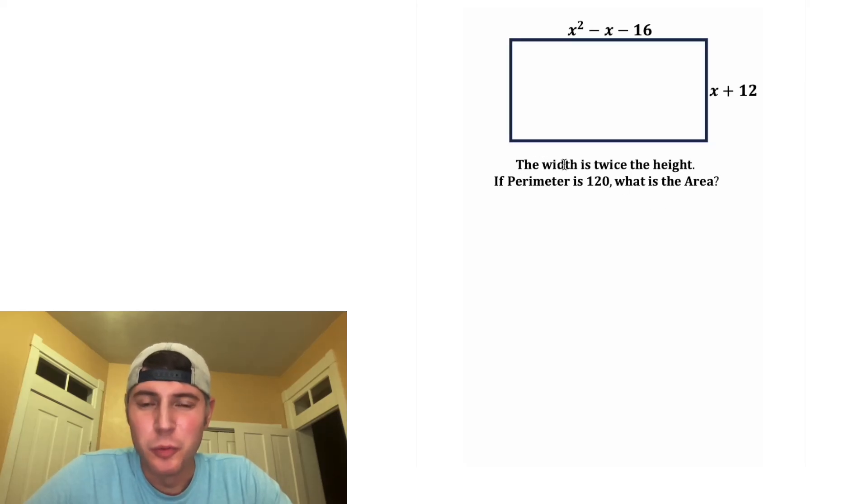Hey guys, I love this problem. It says the width is twice the height. If the perimeter is 120, what is the area? We're given that the width is x² - x - 16 and the height is x + 12.